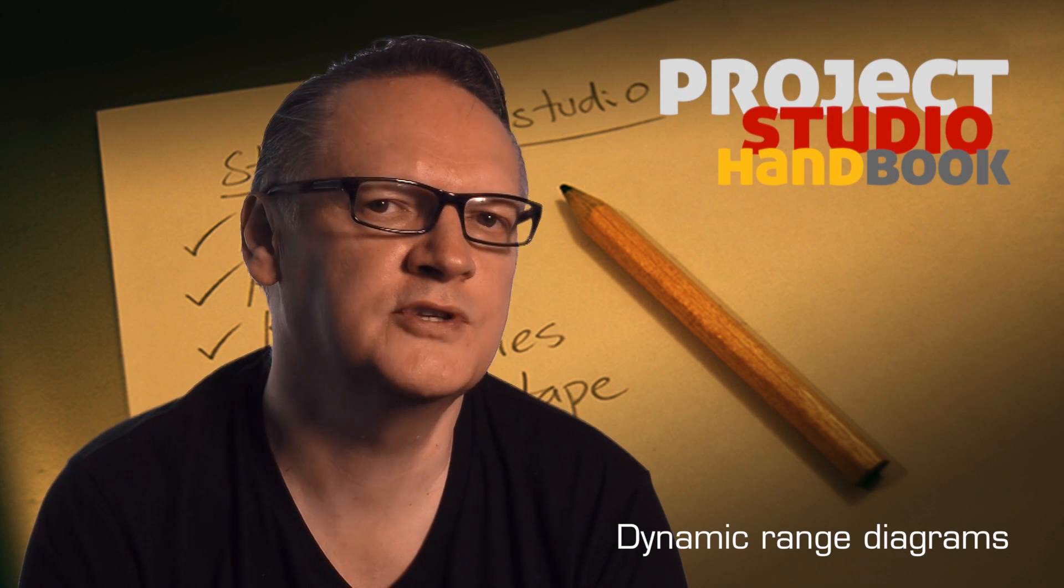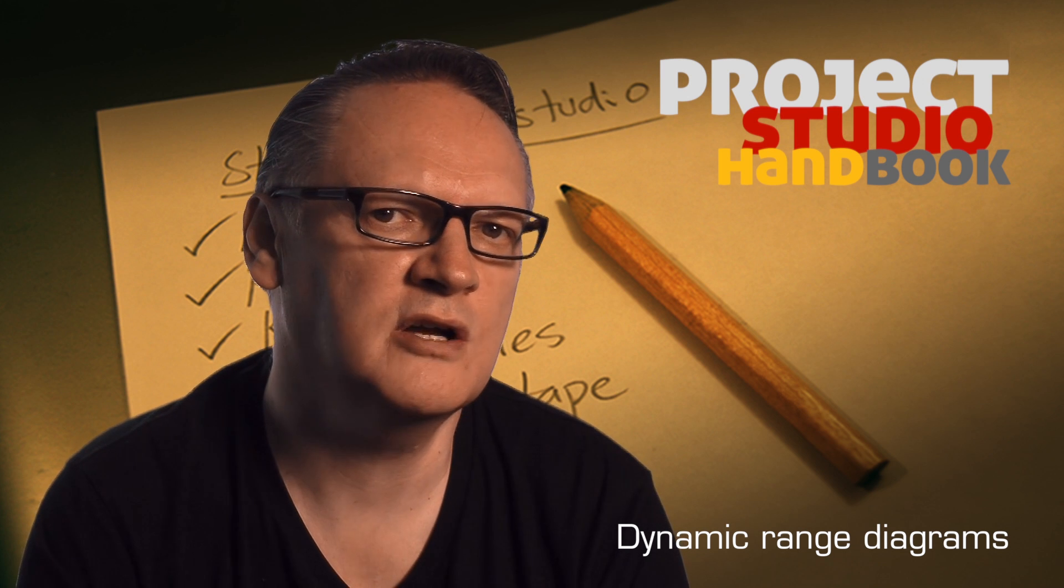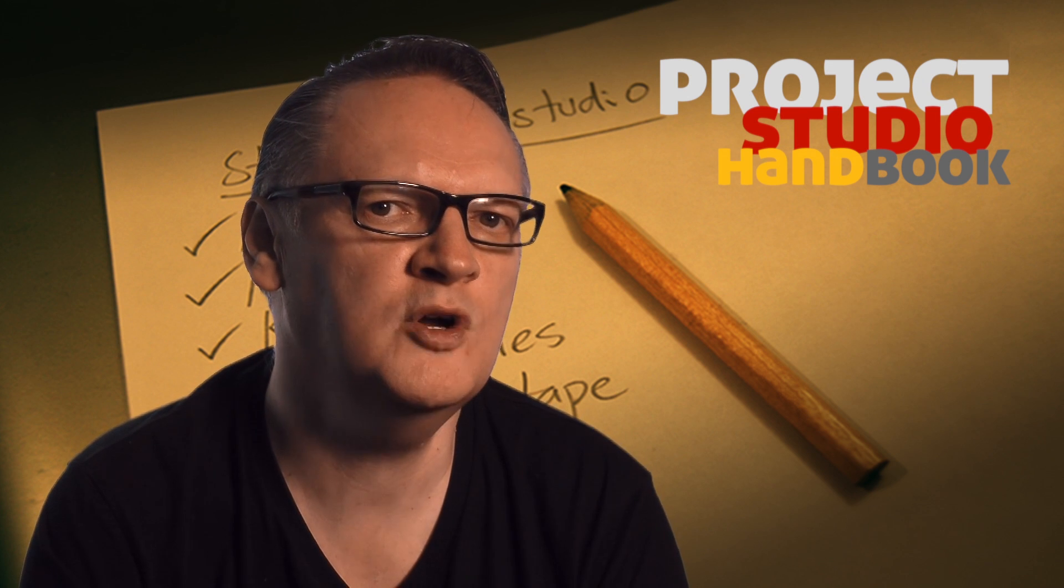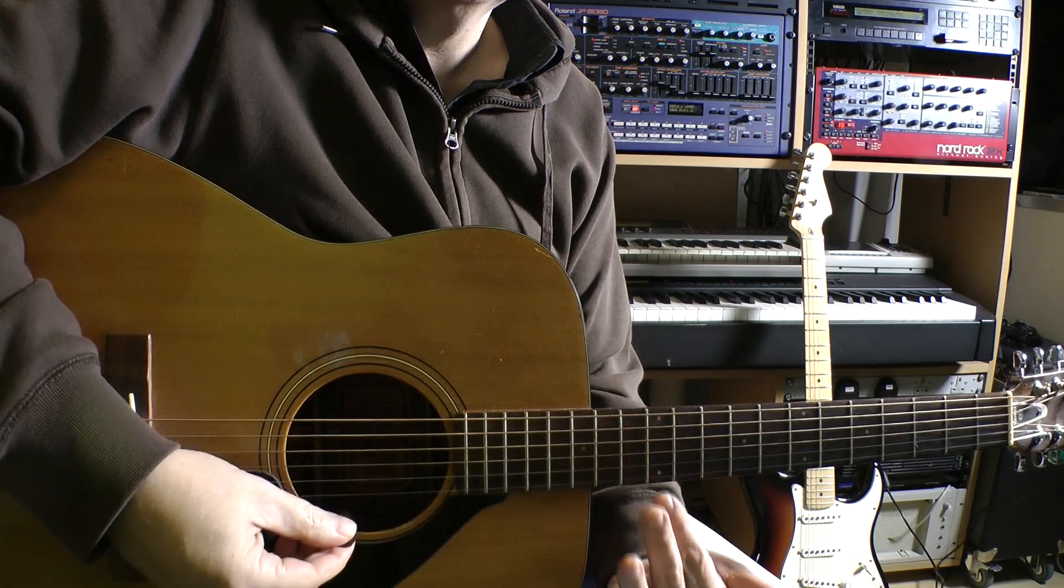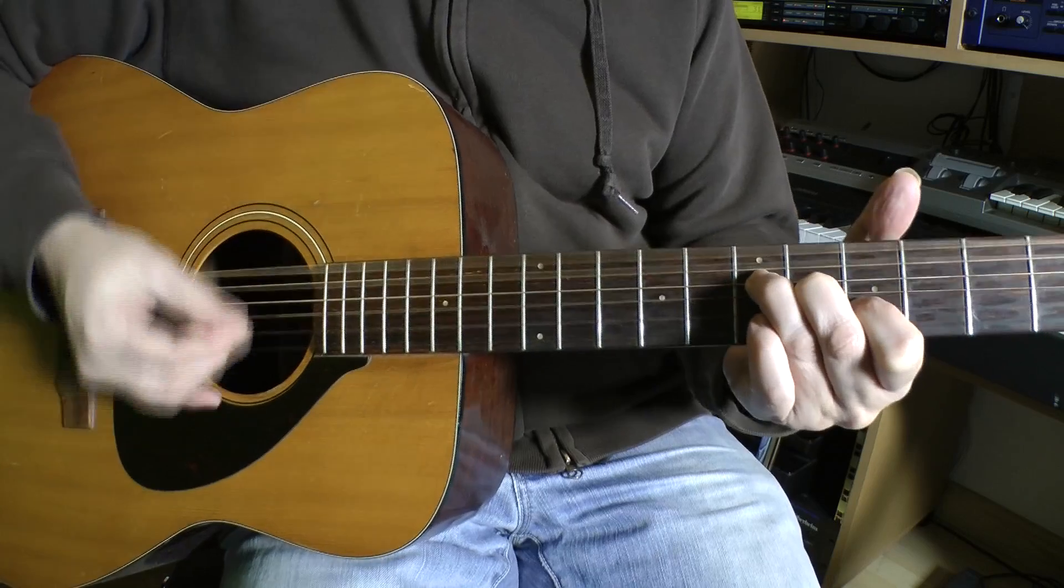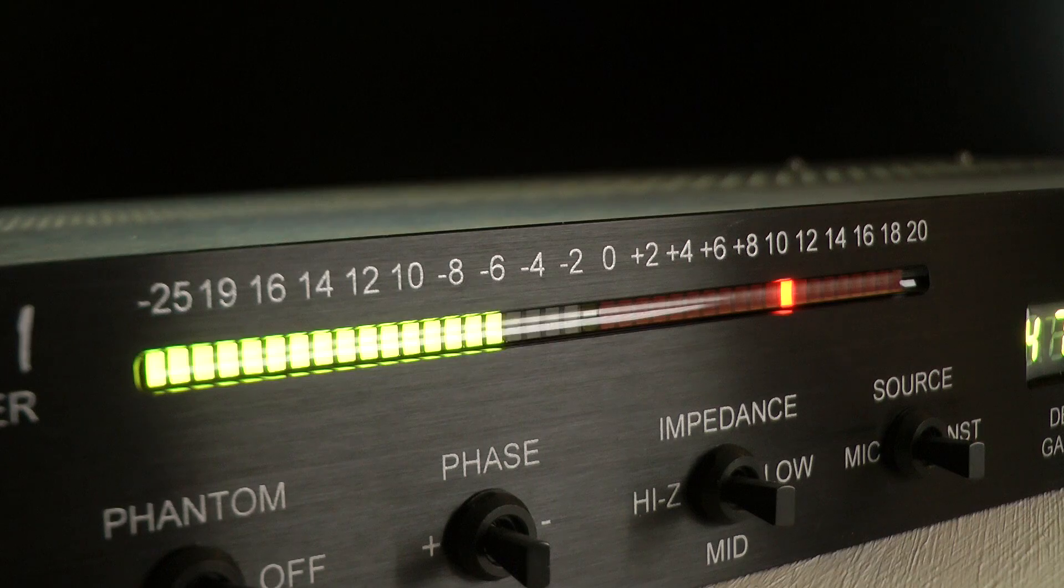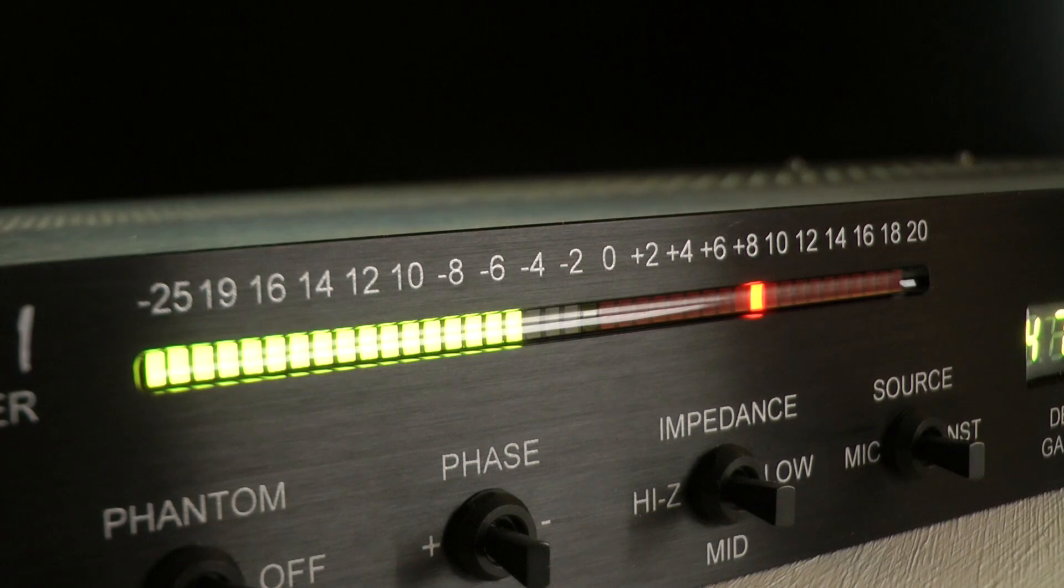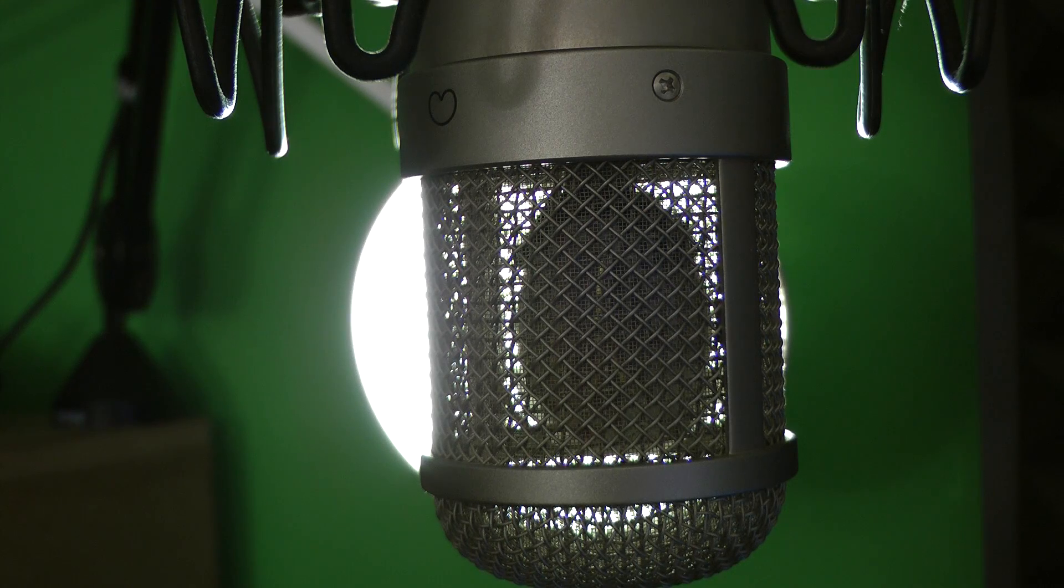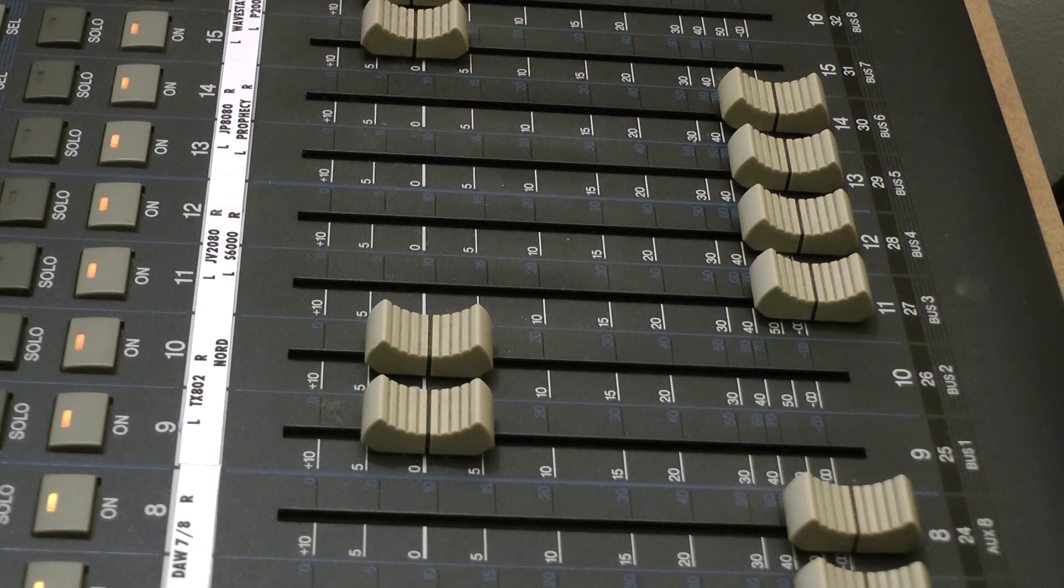Welcome to this tutorial on dynamic range diagrams. The dynamic range diagram can be used for several purposes, including showing the range of volumes between the quietest and the loudest that an instrument or audio device can produce, the range of volumes that an audio device can accommodate, and the relationship between unwanted noise and the wanted audio signal in an audio device or system.